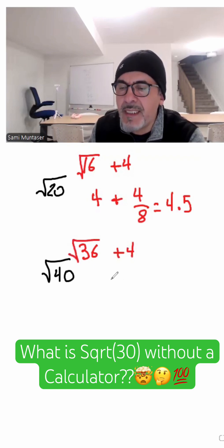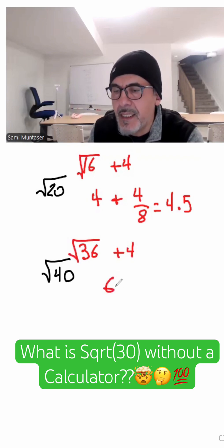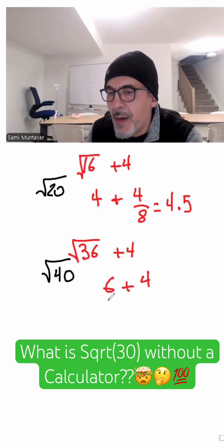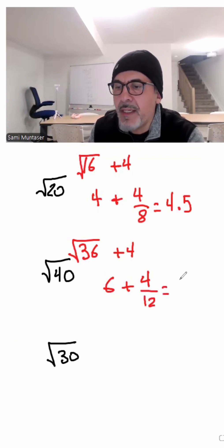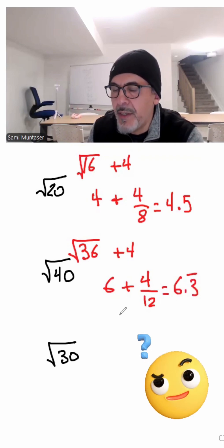And we know the square root of 36 is 6, plus 4 divided by double of the 6. So that's going to be 4 over 12, which is 1 third. And therefore my answer would be an estimate of 6.3 repeating.